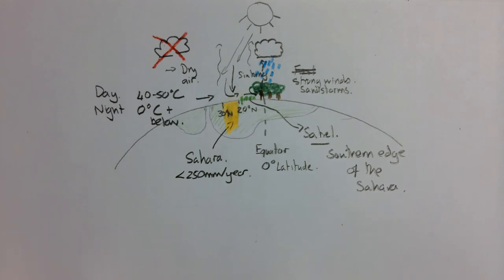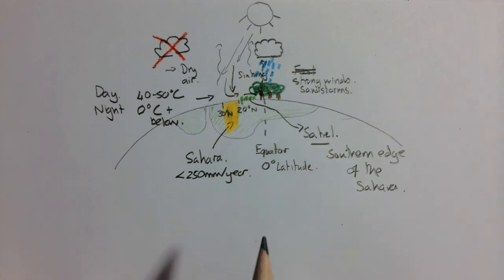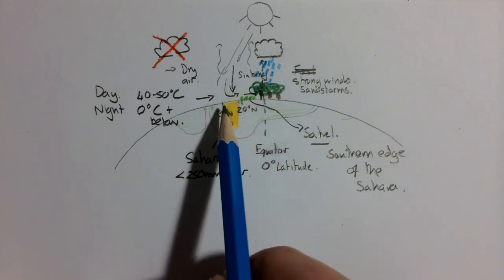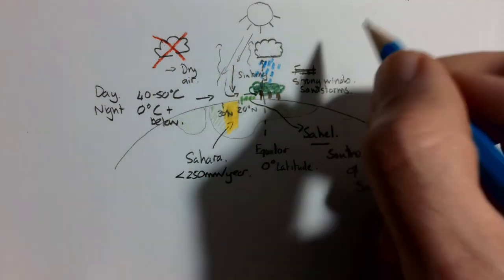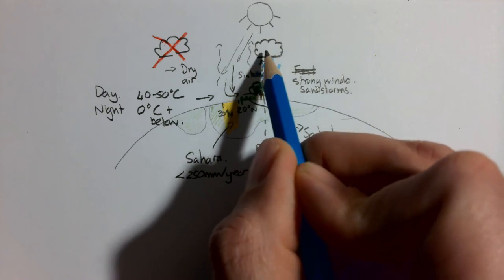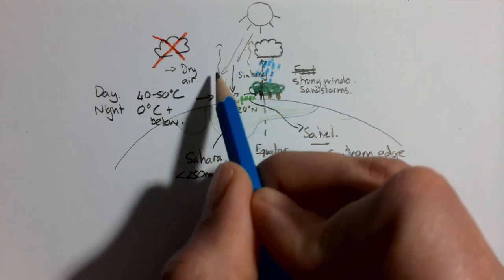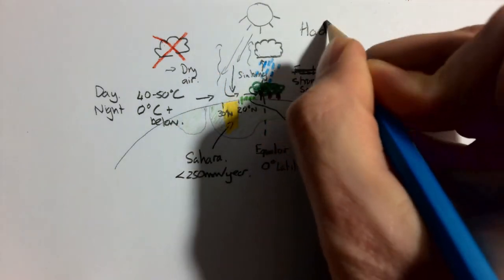So there you go. That is the overarching idea behind what we've been studying. And everything else to do with food insecurity in the Sahel, as well as the ways to combat desertification in the Sahel, is related to this climate model. And we call this circulation of air from the equator to the hot deserts and back round again, we call this the Hadley cell.